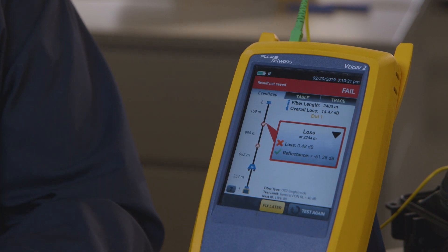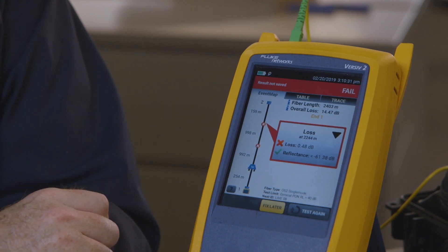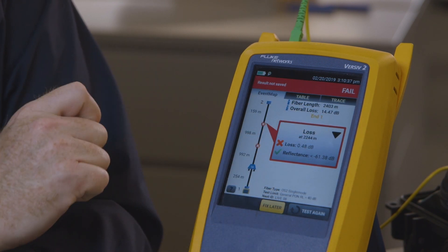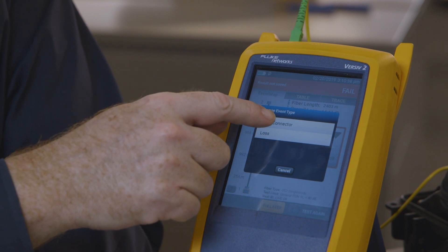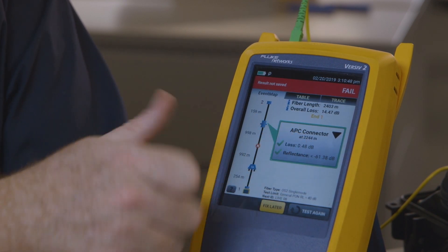What is the difference between an APC connector and a loss event? Well, we change the budget that's allowed. A loss event is given a budget of 0.3 dB and a connector 0.5 dB. So what's new in version 6.1 is this triangle. I'm going to click on this triangle and I'm going to tell the OTDR this is actually an APC connector. Now an APC connector with 0.5 dB, we're green.